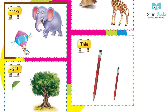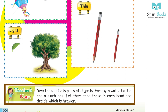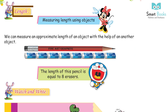Let's revise some of the basic concepts. Take the one that is: Long, Short, Small, Big, Thick, Tall, Heavy, Thin, or Light. Teacher's Note: Give the students pairs of objects — for example, a water bottle and a lunch box — and let them hold one in each hand to decide which is heavier.